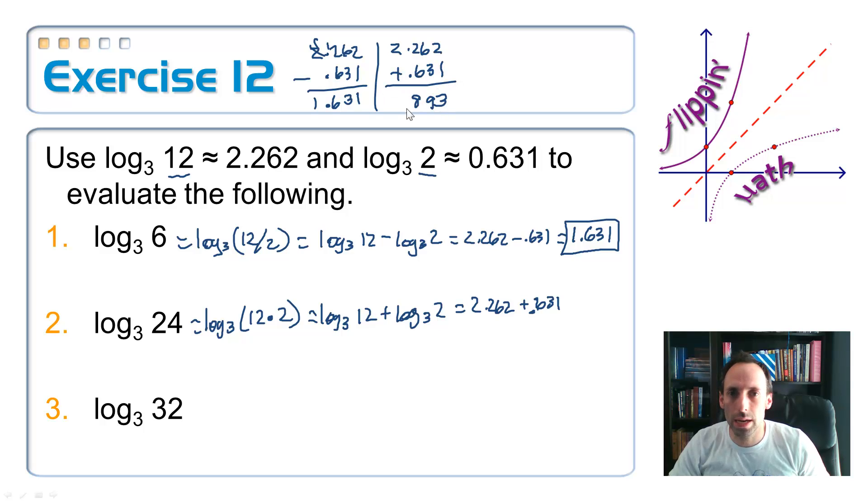Let's do some more math. How about a calculator? 2.262 plus .631. 3, 9, 8 point. There we go. We got 2.893. Again, that's the exponent you have to raise 3 to in order to get 24 as your answer. It's approximated, but you know, you can get pretty close.